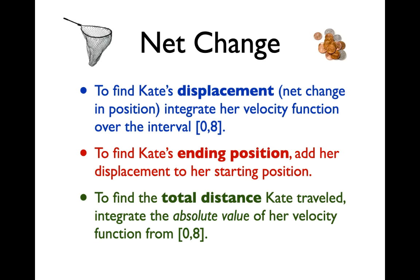To find Kate's displacement — our net change in position — we integrate the velocity function over the interval. Displacement means where we start from and where we end up; the change is our displacement. To find Kate's ending position, add her displacement to wherever she started. If she starts at the origin, add zero; if she starts at three meters, add three. To find the total distance Kate traveled, integrate the absolute value of her velocity function from 0 to 8. Use absolute value bars on a calculator, or break up the integration between positive and negative areas and take the absolute values of the negative areas.